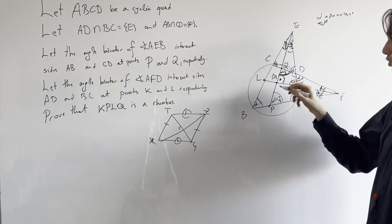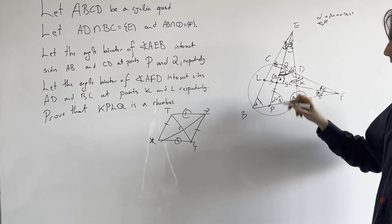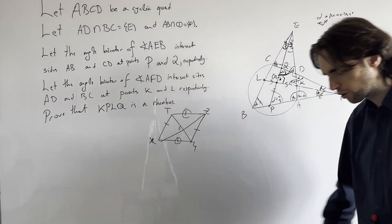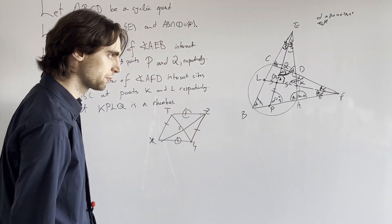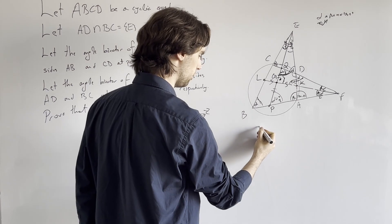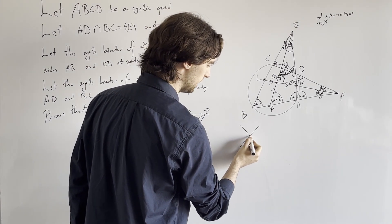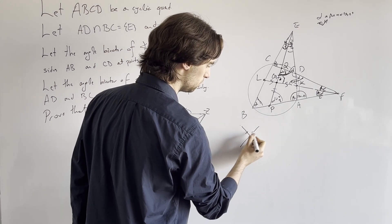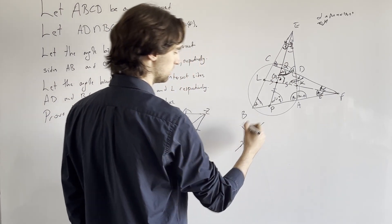Analogously, we get GL is equal to GK. And now we have a quadrilateral where the diagonals intersect at a 90-degree angle, this segment equals this, and this segment equals this.